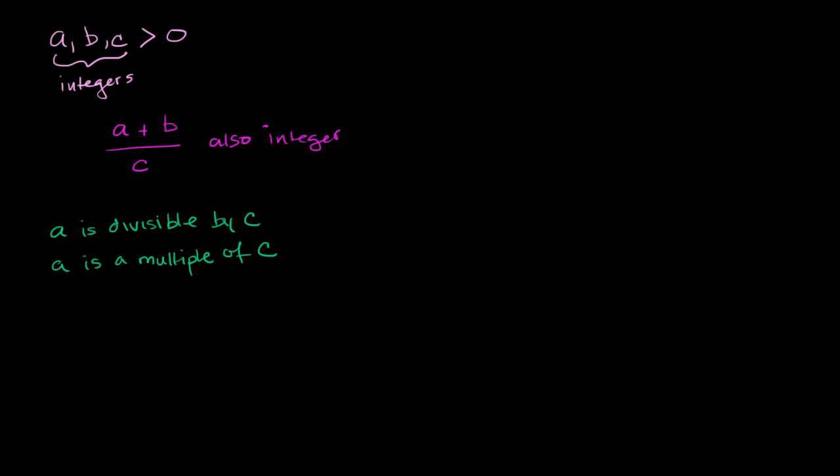So the question for us to work out right now is: Does b have to be a multiple of c? Let me write it that way. Does b, given all of these constraints, have to be a multiple of c?